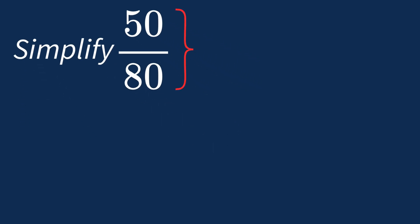To simplify 50 over 80, we need to look for the common factors between the top number, the numerator, and the bottom number, the denominator.